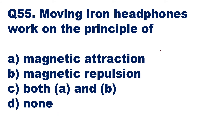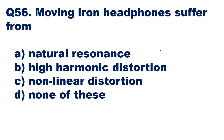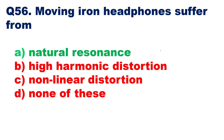Question 55: moving iron headphones work on the principle of — magnetic attraction, magnetic repulsion, both A and B, or none. They work on the principle of magnetic attraction — option A is the right answer. Question 56: moving iron headphones suffer from which problem — natural resonance, high harmonic distortion, non-linear distortion, or none. The problem faced in moving iron headphones is natural resonance — option A is the right answer.